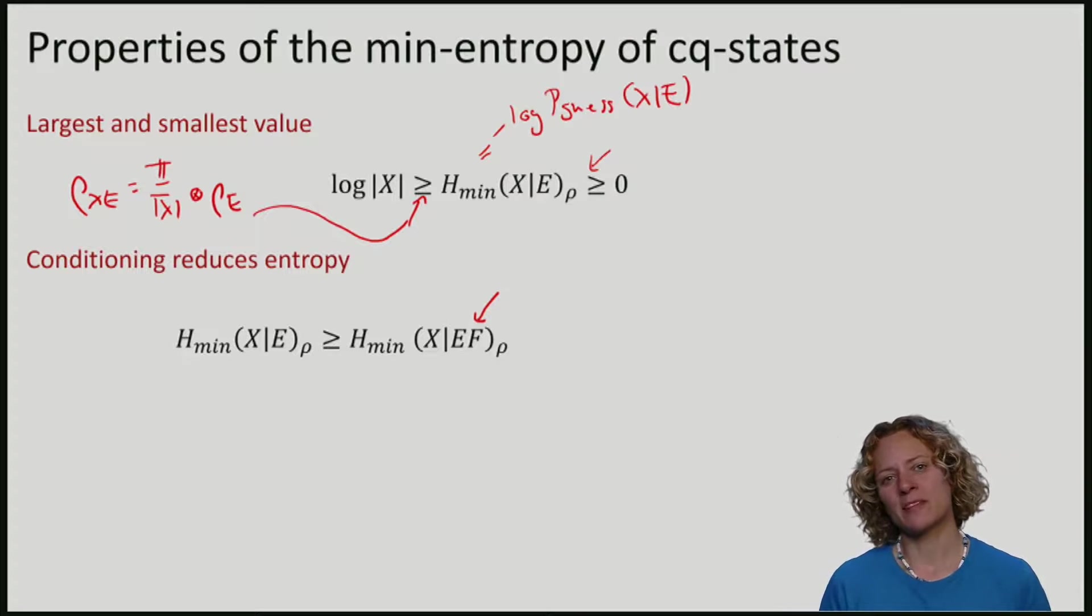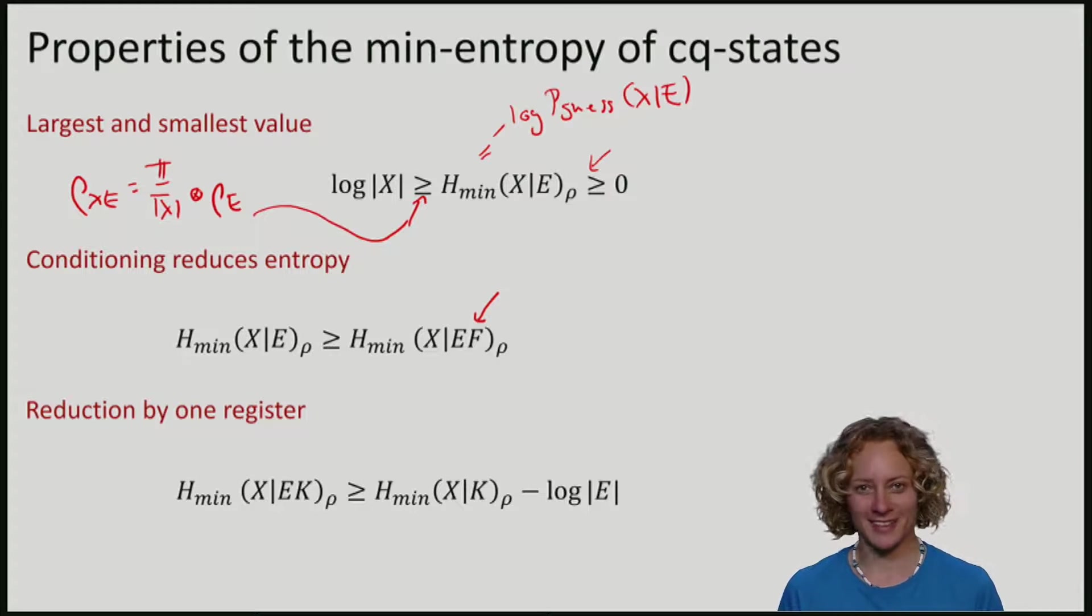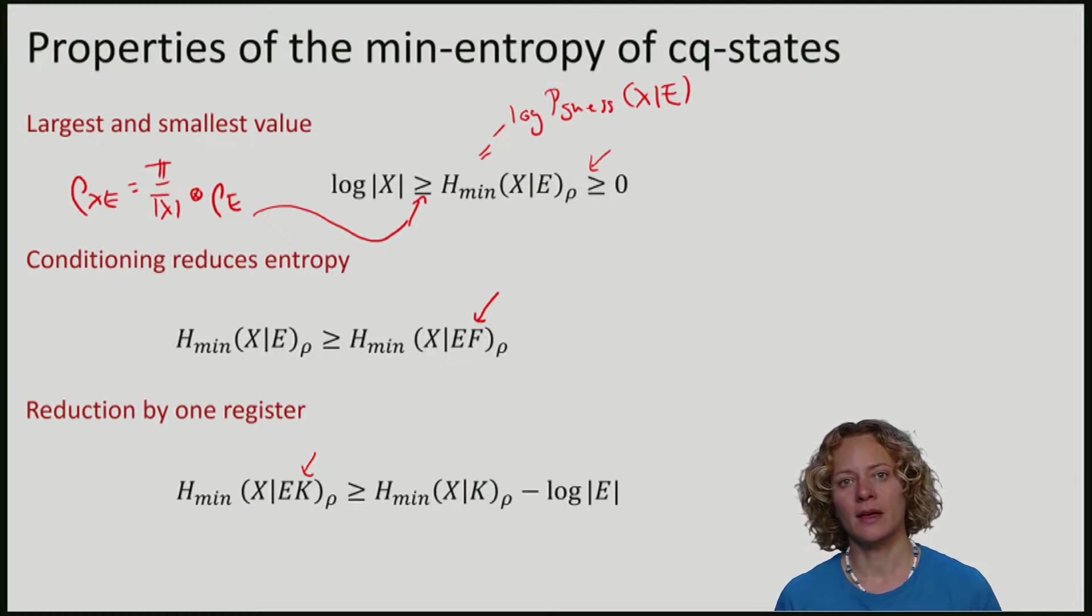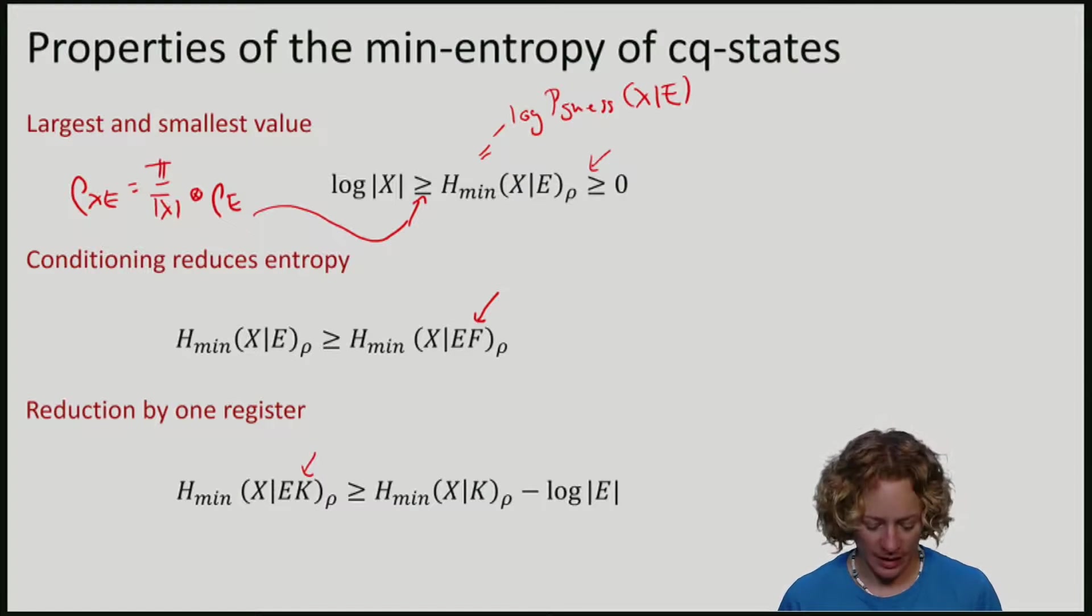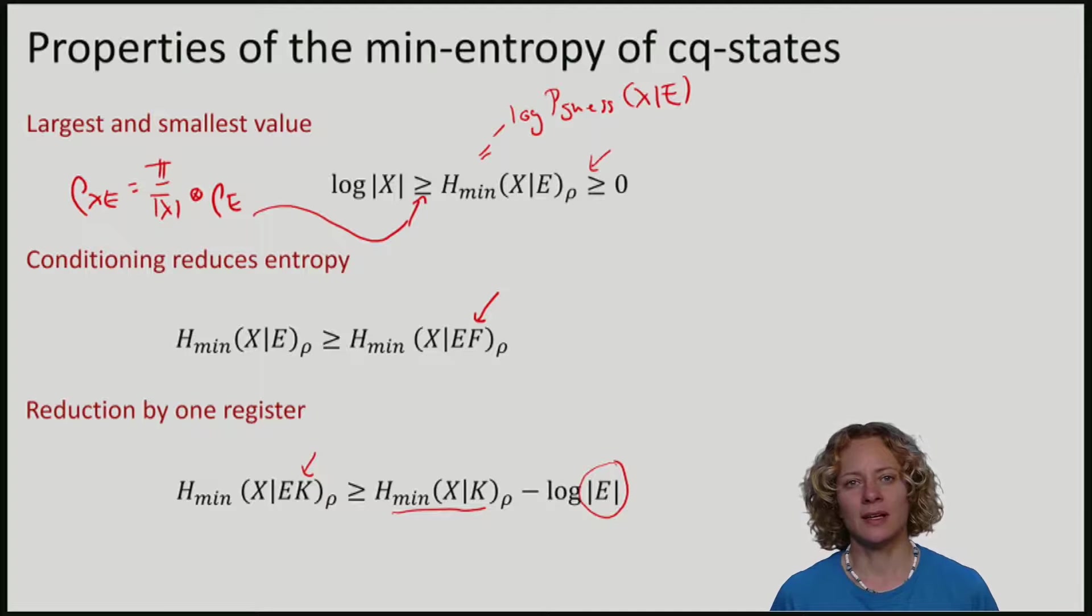The last property is more difficult to show and is given as an exercise in the lecture notes. Let's suppose that I consider the min-entropy of x given E and some other register k. Then it is possible to show that this entropy is at least as large as the entropy of x given just k, minus the log of the dimension of the register E. This tells me how much E can at best help me in trying to guess x.